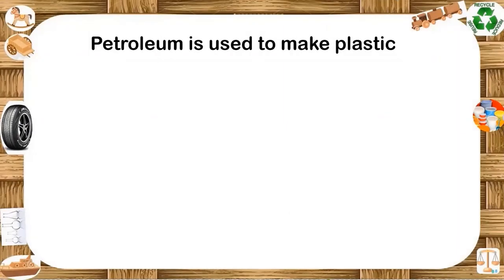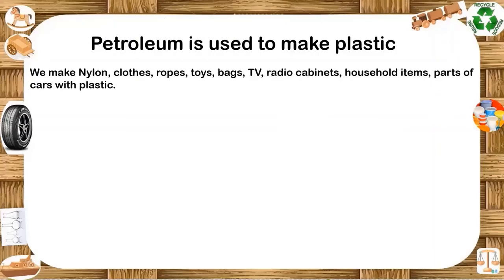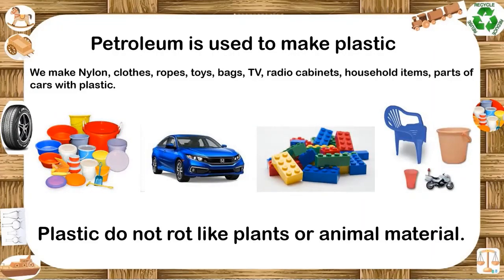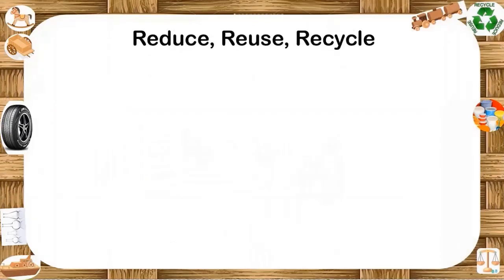Petroleum is used to make plastic. We make nylon clothes, ropes, toys, bags, TV and radio cabinets, household items, and parts of cars from plastic. Plastic does not rot like plant or animal material — this is a useful property because materials made of plastic last for a long time. But there is a danger in using plastic: when we throw it away, it stays in the soil and causes pollution. So we should not use too many things made of plastic. Excessive use of plastic is harmful for the environment. Therefore, we should try to reduce, reuse and recycle plastic.